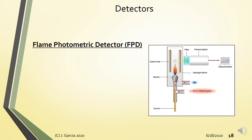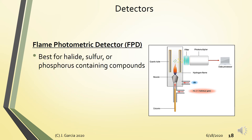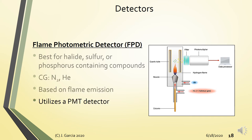The flame photometric detector (FPD) is used for halide-, sulfur-, or phosphorus-containing compounds. It is based on light emission: compounds containing halide, sulfur, or phosphorus emit characteristic emissions during combustion. Common carrier gases are nitrogen and helium. It utilizes a photomultiplier tube and is quite sensitive as a detector.